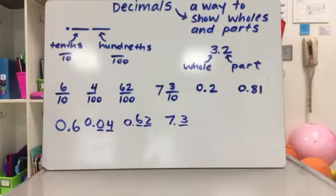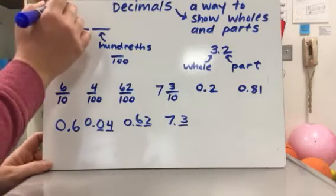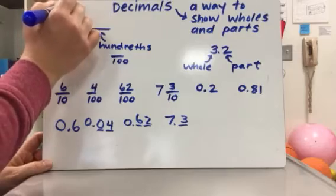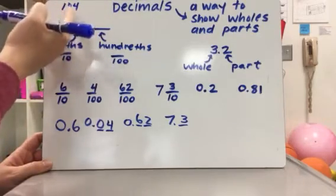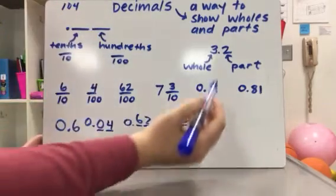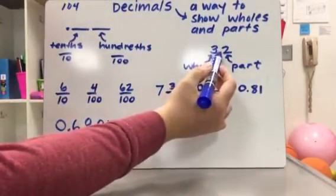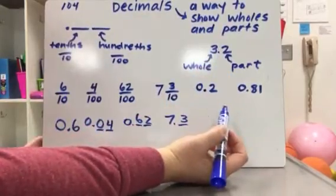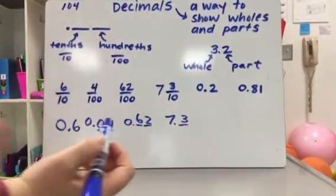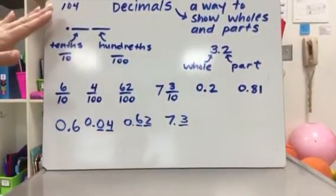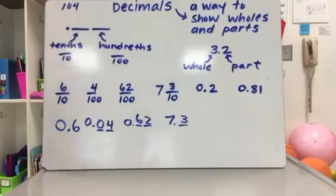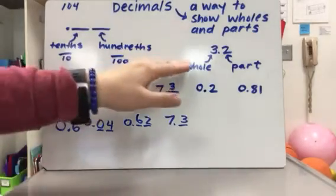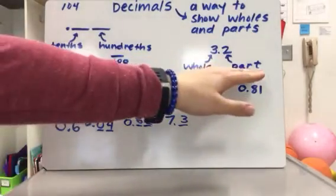Back in fourth grade, we try to stop the habit of kids saying a number like 104 as 'one hundred and four,' because 'and' is used when we have a decimal. You don't want to use 'and' when you just have whole numbers. 'And' specifically represents that you're going from whole numbers to parts.